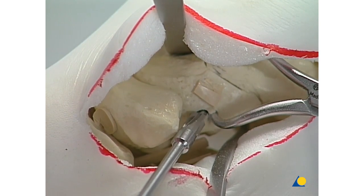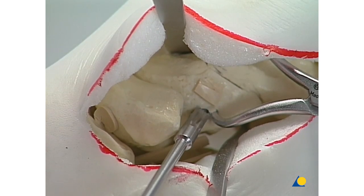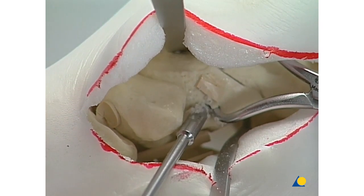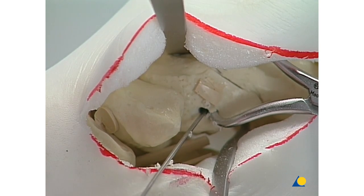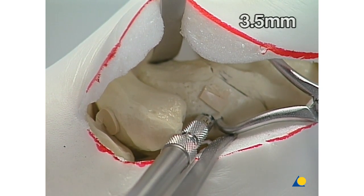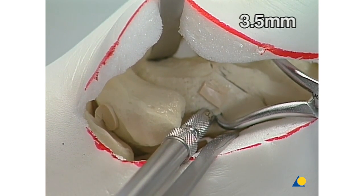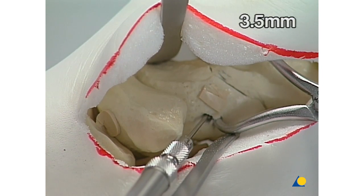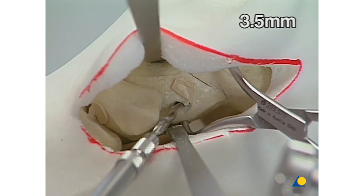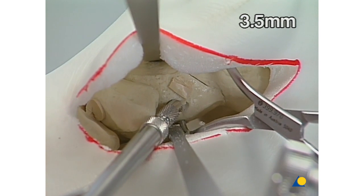Countersink the hole to accommodate the head of the screw in the cartilaginous layer of the talus. Tapping of the drill hole using the 3.5mm cannulated tap. The first fragment will be over-drilled using the 3.5 cannulated drill bit.